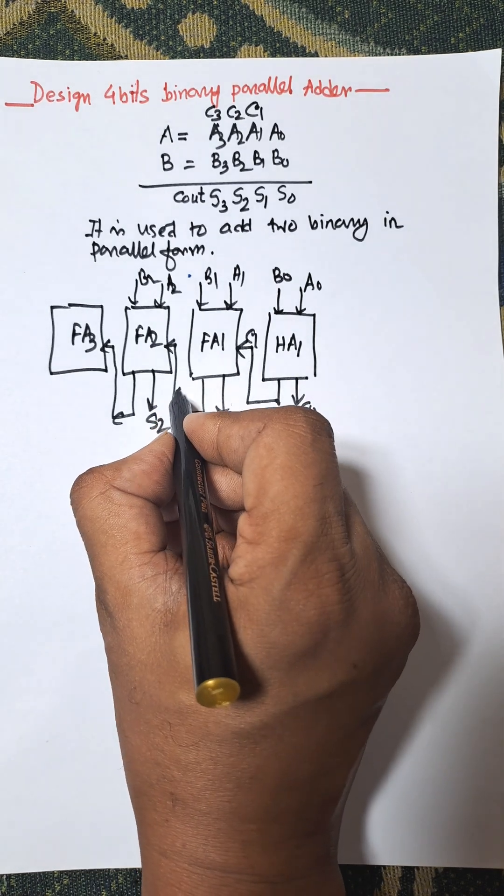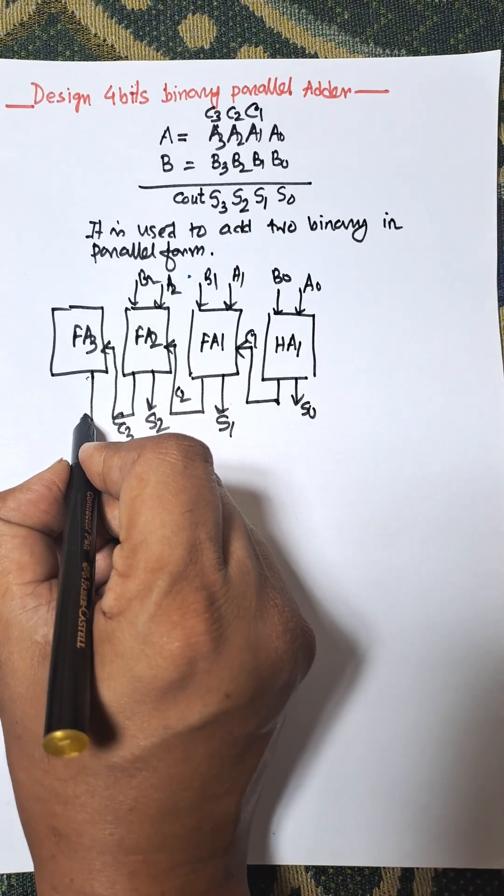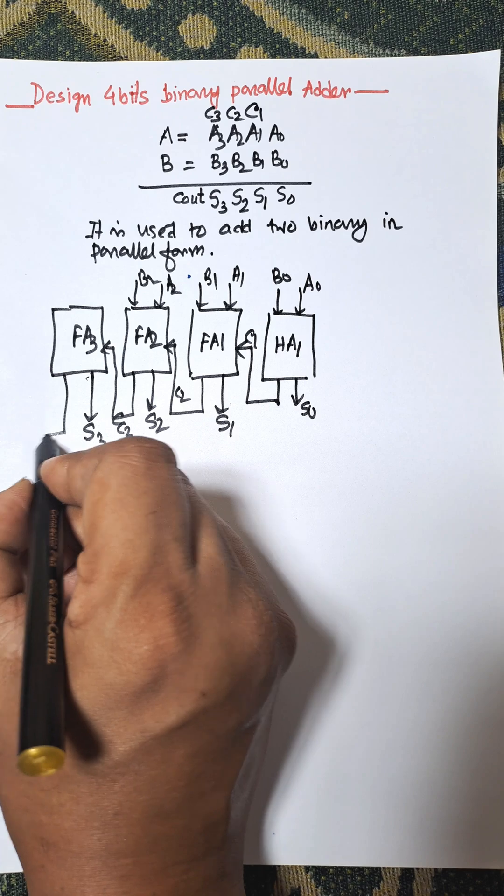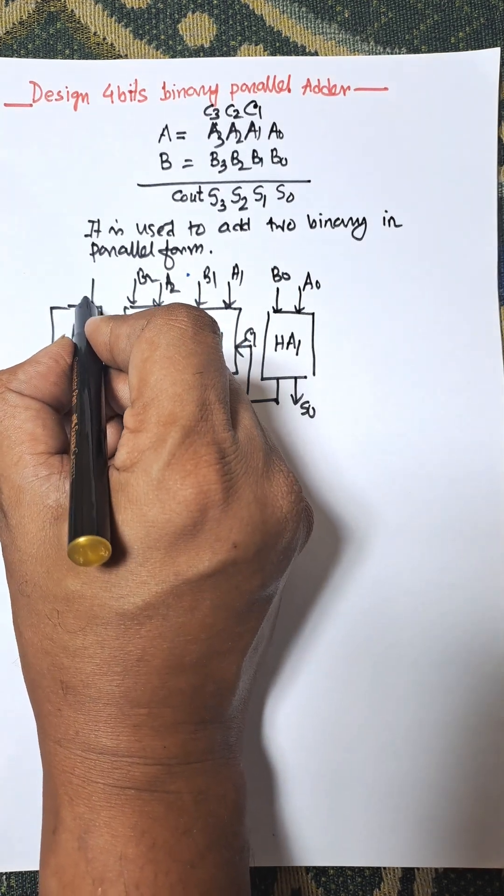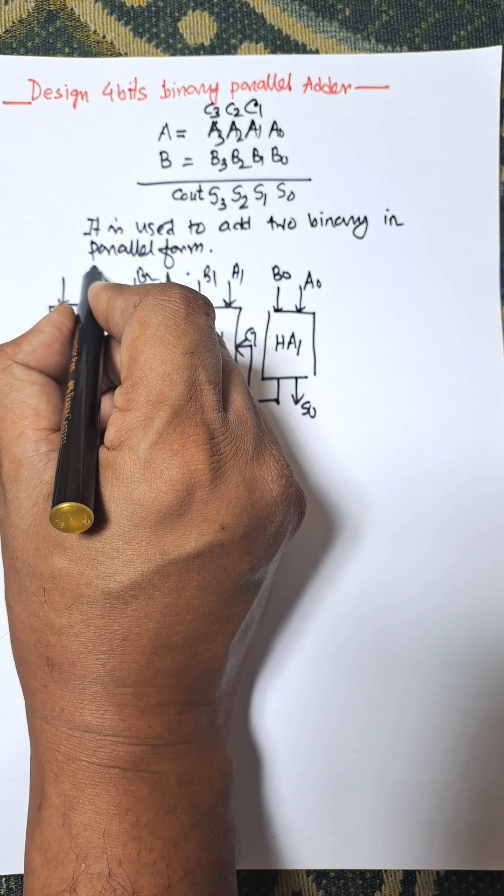This is C1, this is C2, C3, and it will produce sum S3 and carry out Cout. It will take two inputs A3 and B3.